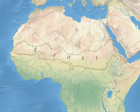The Sahel is the eco-climatic and biogeographic zone of transition in Africa between the Sahara to the north and the Sudanian savannah to the south. Having a semi-arid climate, it stretches across the south-central latitudes of northern Africa between the Atlantic Ocean and the Red Sea. The name is derived from the Arabic word 'Sahil', meaning 'coast' or 'shore' in a figurative sense, in reference to the southern edge of the vast Sahara, while the name Swahili means 'coastal' in a literal sense.